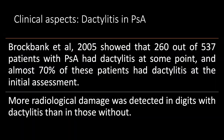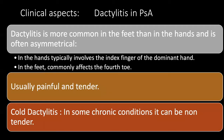Regarding prevalence of dactylitis, references show rates ranging from 50% to 70%. According to Propank in 2005, among 535 patients, 260 had dactylitis, representing about 70% of affected patients. There is also a connection between severe radiological damage and the presence of dactylitis. Dactylitis is more common in the feet than the hands, is often asymmetrical, usually affecting the dominant hand and index finger, and in the feet, typically the fourth toe.